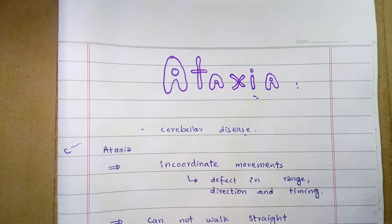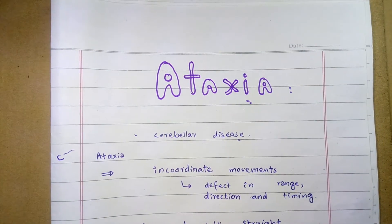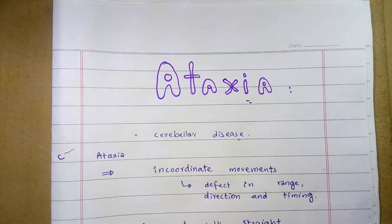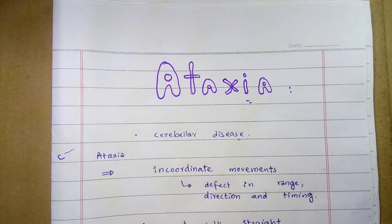Welcome students. In this video I will discuss one of the clinical abnormalities of the cerebellum, that is ataxia. Ataxia is a feature of cerebellar diseases. Cerebellar diseases involve the cerebellar cortex and one or more deep cerebellar nuclei. It generally refers to incoordination in movements due to defects in the control of range, direction, rate, and timing of movement.